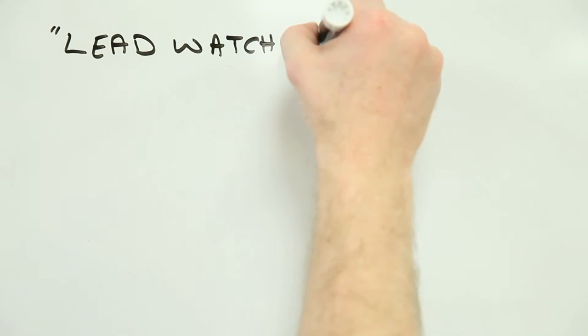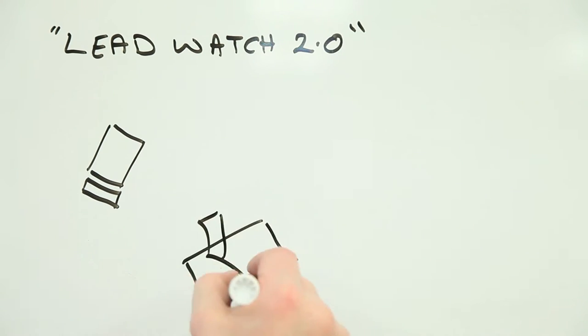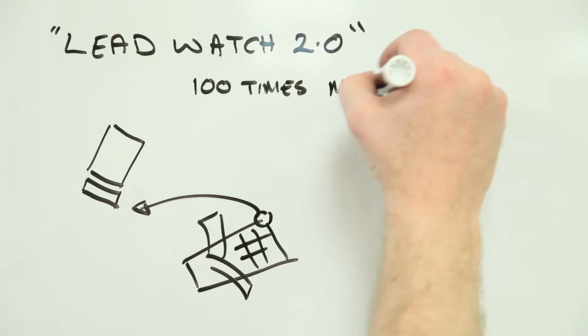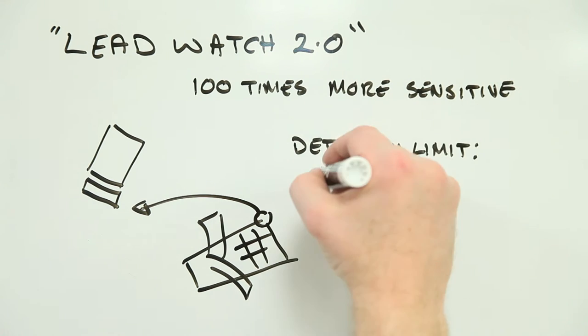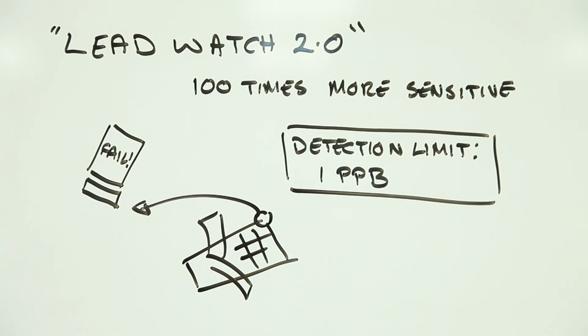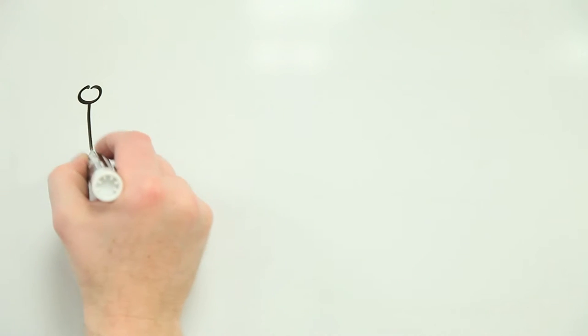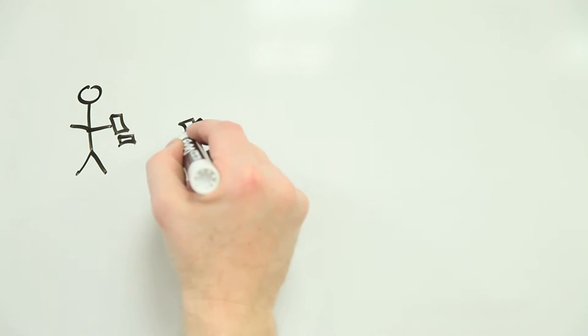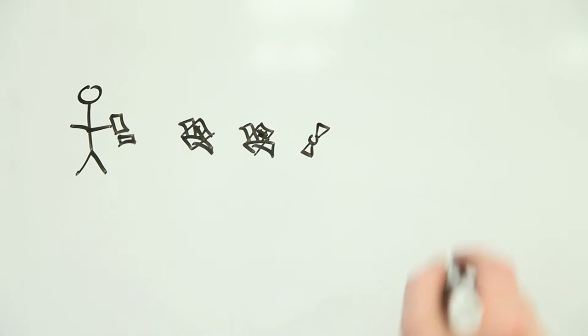A year later, LeadWatch 2.0 is released. This version warns you when your chocolate lead content is 100 times lower than the acceptable level. Eager to consume as little lead as possible, you purchase LeadWatch 2.0.